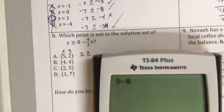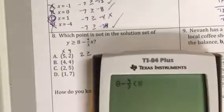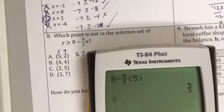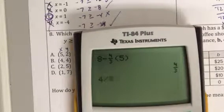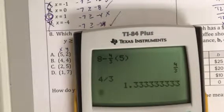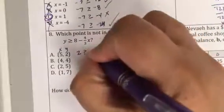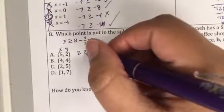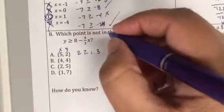8 minus, oh y equals enter, 4 thirds. And I'm going to multiply it by the x value, which is 5. That's 4 thirds. 4 thirds in decimal form is 1.3. Is 2 greater than 1.3? That is a true statement.